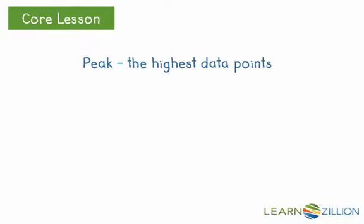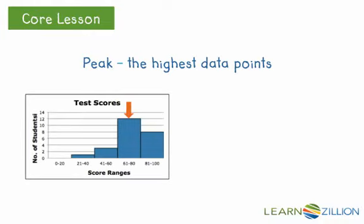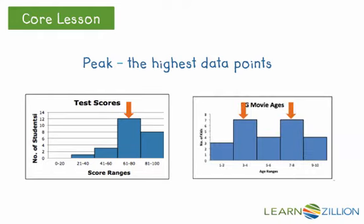A peak is the highest data points. So in this histogram, it's for 61 to 80. In this histogram, there are two peaks, one between 3 and 4, and one for 7 and 8.